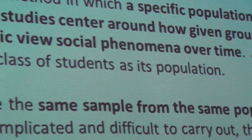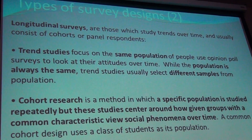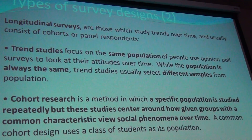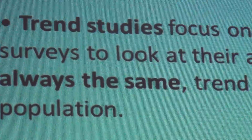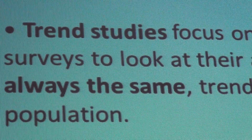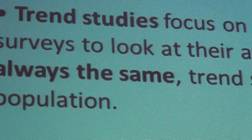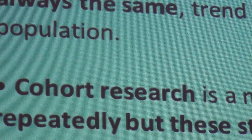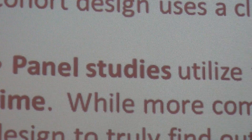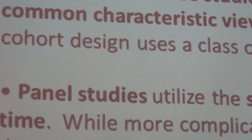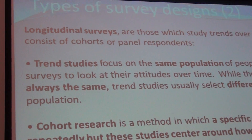The other form is longitudinal, and under longitudinal we have different categories. Longitudinal looks at trends over time. There are three different types: the first is a trend study, the second is a cohort study, and the third is a panel study. Those are the three possibilities you have.